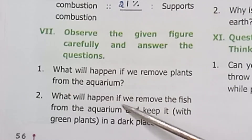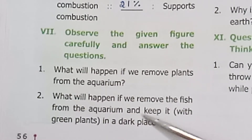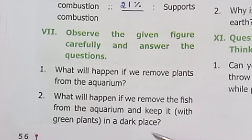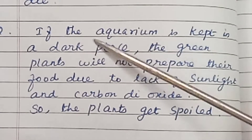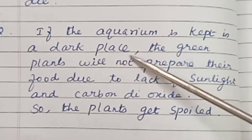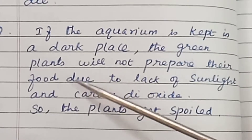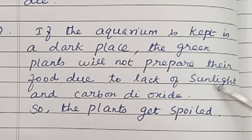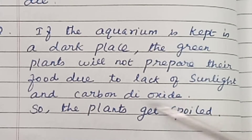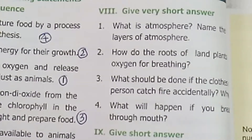Question 2: what will happen if we remove the fish from the aquarium and keep it in a dark place? If the aquarium is kept in a dark place, the green plants will not prepare their food due to lack of sunlight and carbon dioxide, so the plants will get spoilt.